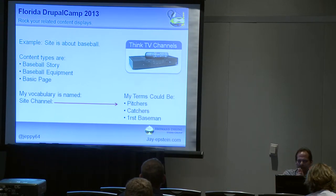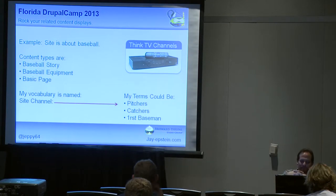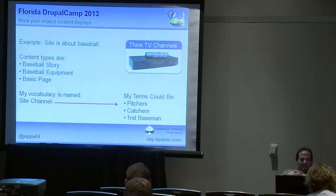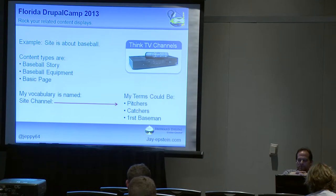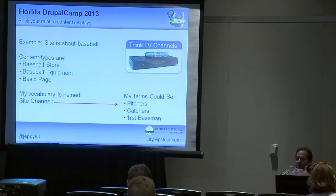I played baseball for many years, semi-pro. So everything I do as far as demos is always revolving around baseball. We have a little mini site about baseball with some content types: baseball story, baseball equipment, and basic page. Using my analogy, if I create a vocabulary called site channel, my terms would be pitchers, catchers, first baseman, and so forth. When I put content into the site, all I need to do is go ahead and put the node in, then tag which one of those site channels it applies to.